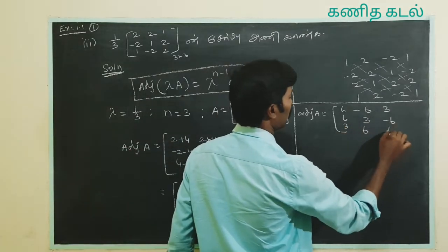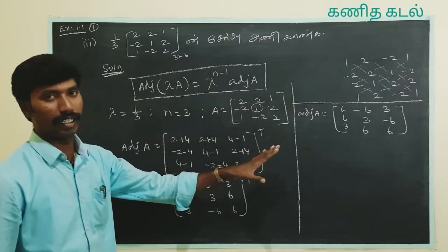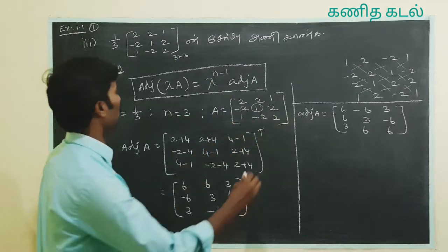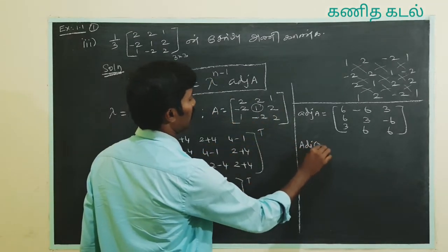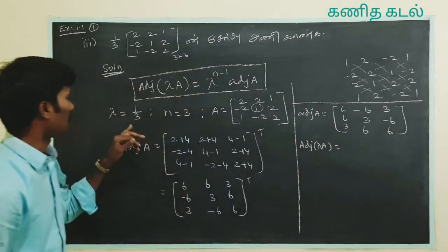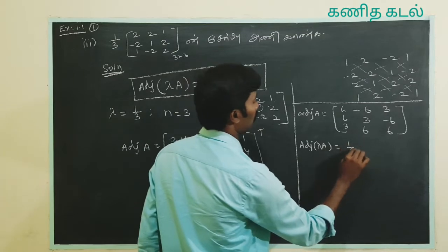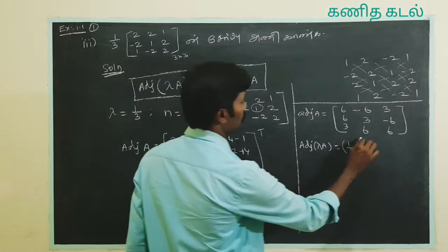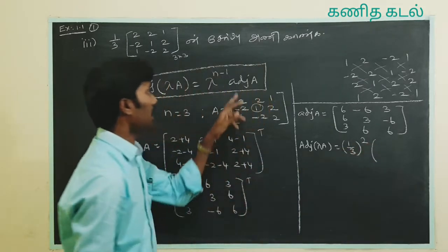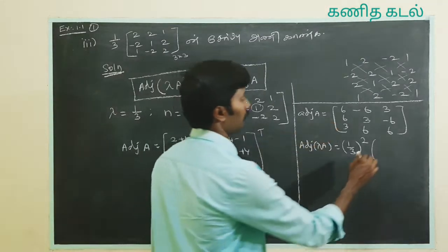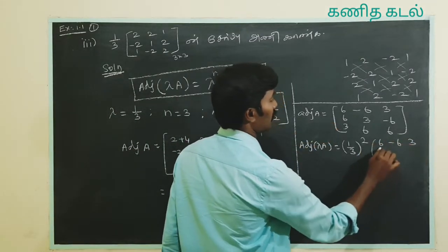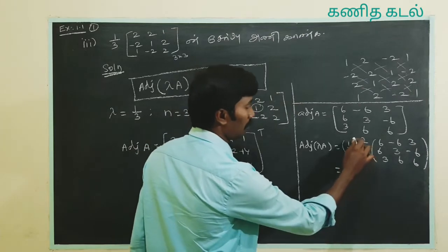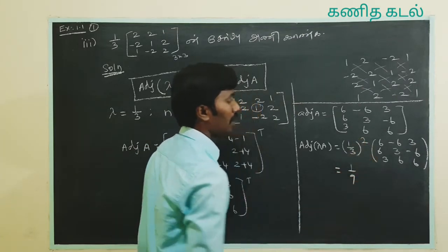Now transpose — this is the adjoint A. Now we can substitute lambda and n. Therefore adjoint of lambda A is equal to lambda value one by three, power n minus 1. n value is 3, so 3 minus 1 = 2. Into adjoint A — adjoint A value we can substitute: 6, minus 6, 3, 6, 3, minus 6, 3, 6, 6.